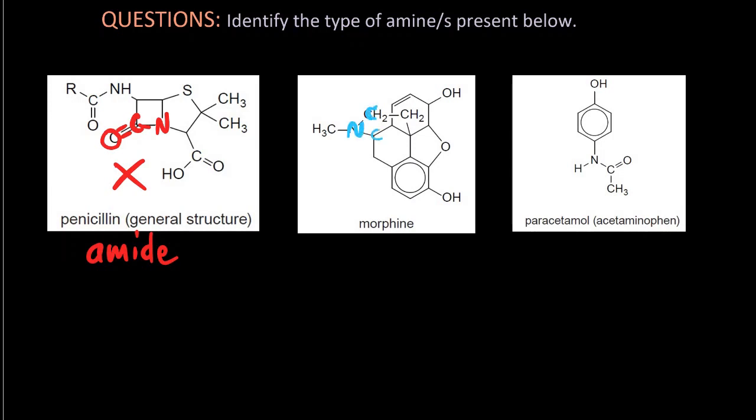Morphine, yet the nitrogen is attached to three carbons. And none of those carbons are double bonded to oxygen. So indeed, morphine has a tertiary amine.